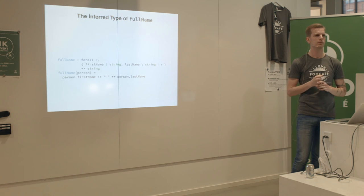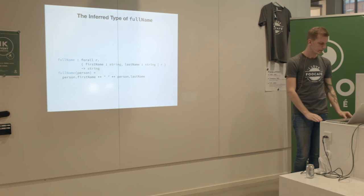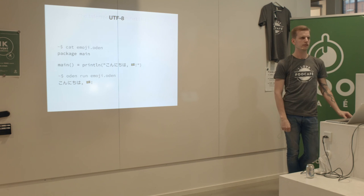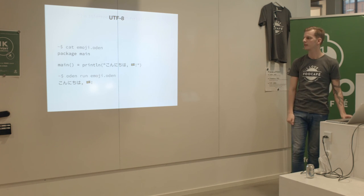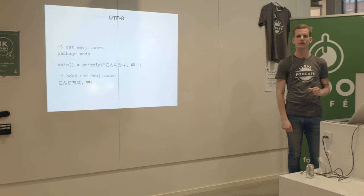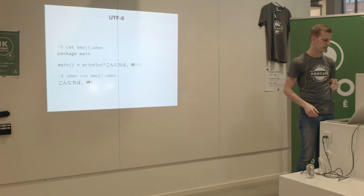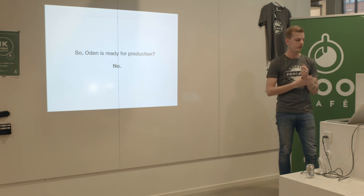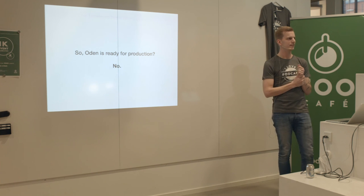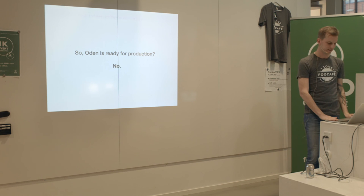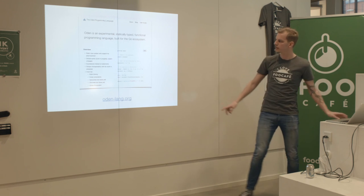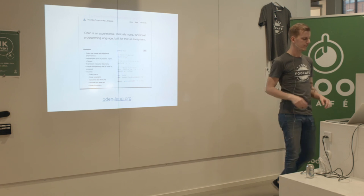There's more stuff coming for records. You can write nice UTF-8 stuff in Oden including emojis - if you want to be a modern cool language you have to include those. Is Oden ready for production? I'd say no - there are no floats. But you can try it - there's a site at odinlang.org with documentation and code samples you can run.